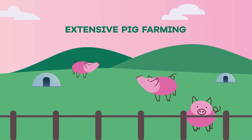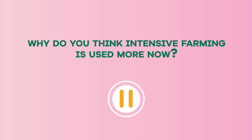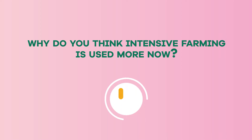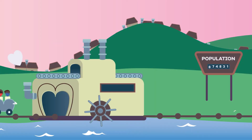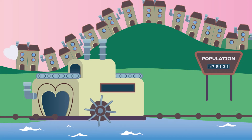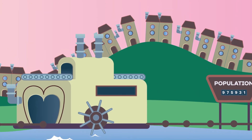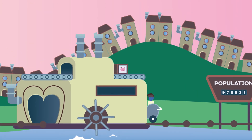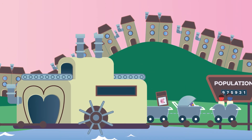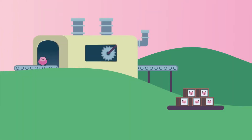There are much fewer pigs per hectare in extensive farming. Why do you think intensive farming is used more now? The human population has increased so much since the Industrial Revolution that we now need to feed more people with the same or less available land, so the process has had to become more efficient.